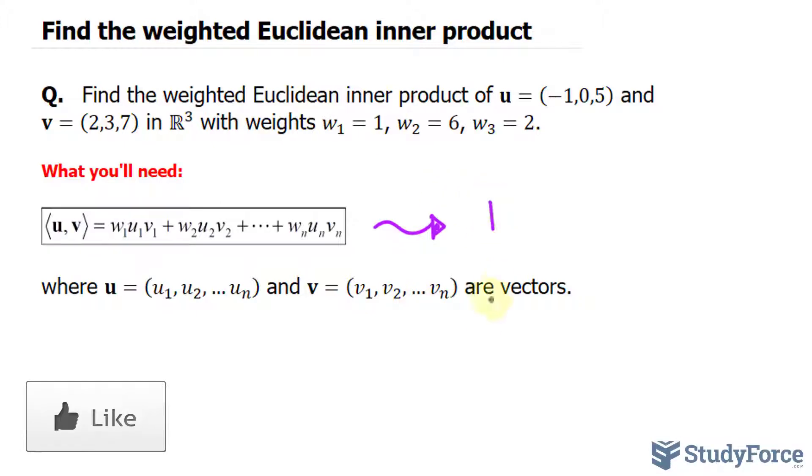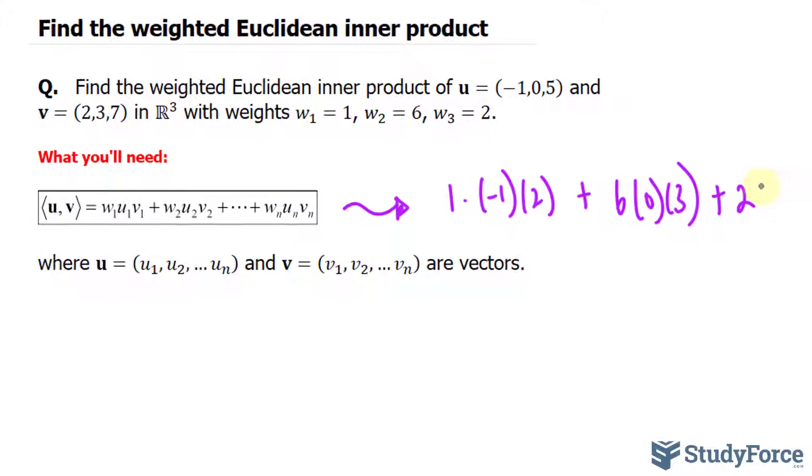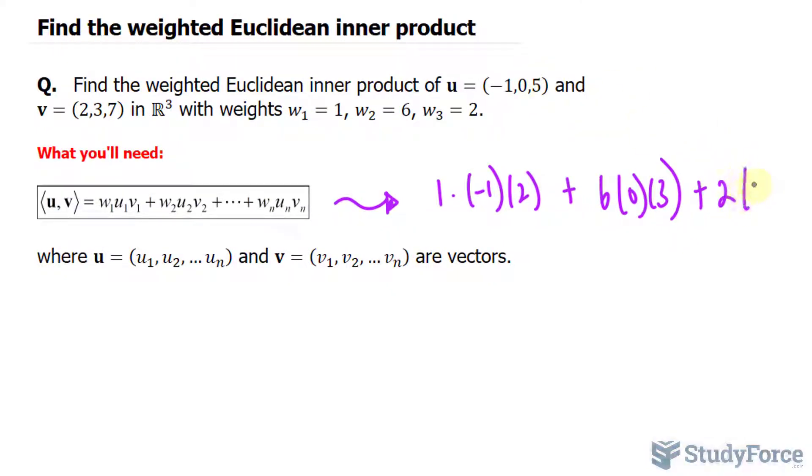Weight 1 is 1, and we'll multiply that by the x component of u times the x component of v plus 6 times 0, and the y component of v here is 3, plus 2 times the z component, 5, times 7.